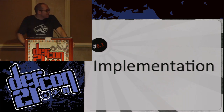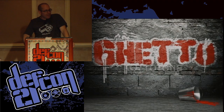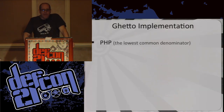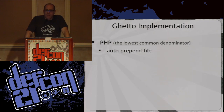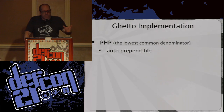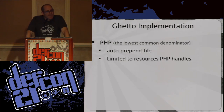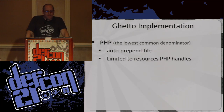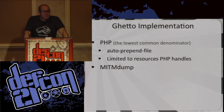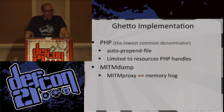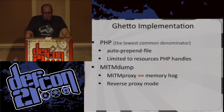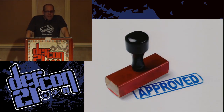So how can people implement this? There's no point in me talking about this stuff if we don't know how to implement it. So the ghetto option: we can implement it using PHP — the lowest common denominator. You can auto-prepend a PHP file to randomize the response code within a specific section of response codes supported by the browser. But we're limited by resources that PHP handles — if your web server starts to error out because people are sending unexpected stuff, the web server is going to respond back. There's man-in-the-middle dump — as a reverse proxy in front of your web server, you can have simple scripts that change the response codes. It works, but it's not the best solution.